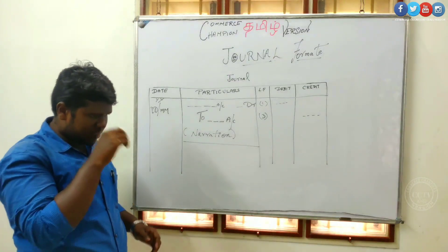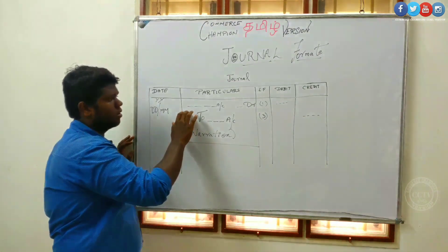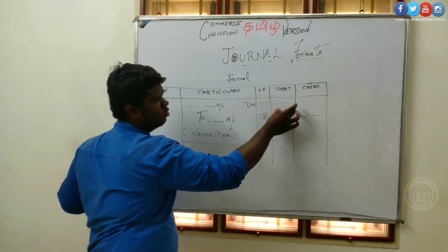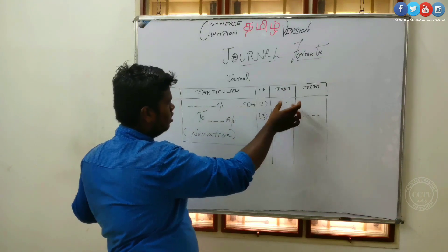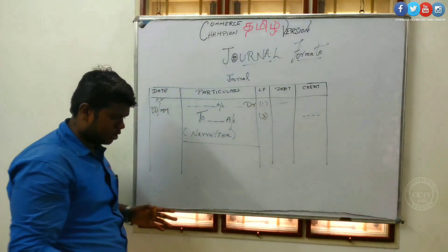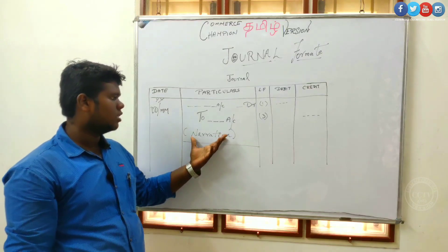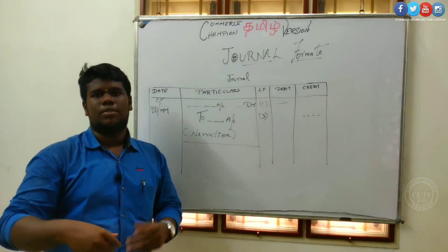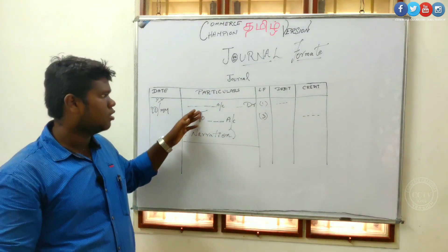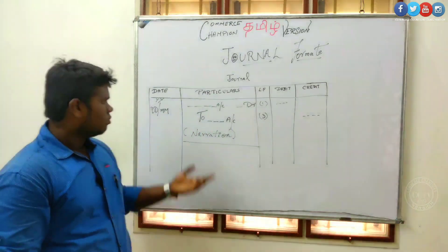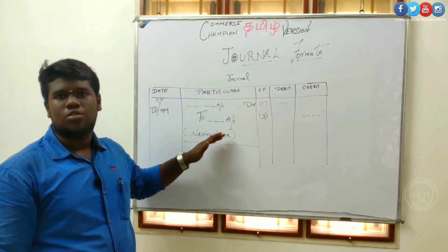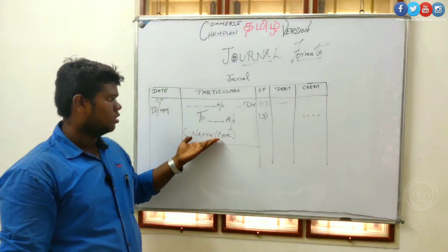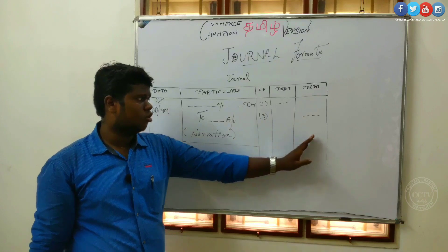Cash account debit to furniture account — we need to get the amount. If you learn a journal entry: cash account debit 10,000 and furniture account 10,000. We need to get the narration. That's how you will record the furniture. We need the cash account, and then the narration — the sale or purchase of furniture.